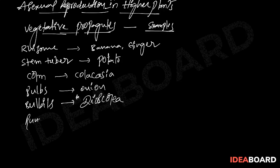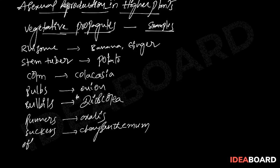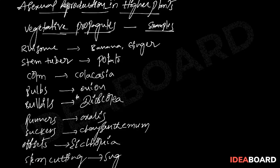And next, runners, oxalis, suckers, chrysanthemum, offsets, eichornia, offsets, eichornia, stem cutting, sugarcane, epiphyllous spine.